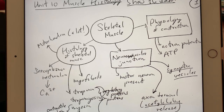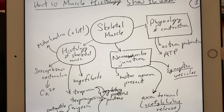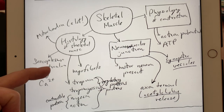Welcome to units 10 and 11 for anatomy and physiology one lab students. In these two chapters we're going to be discussing the basics of the skeletal muscles in the human body — specifically some of the physiology and histology of the skeletal muscles in the first chapter, and in unit 11 we're going to be naming muscles in the body. We're not going to name all of them, but we're going to name all the major muscles, especially superficial and large muscles. Let's begin by discussing these basics first.